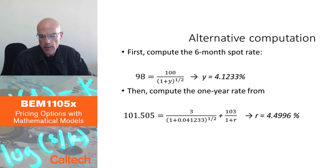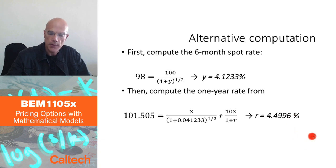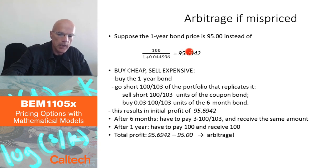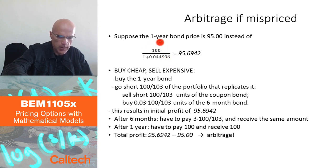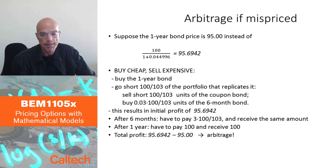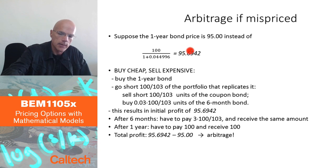Now let's verify numerically that if the rate is not 4.5%, there is arbitrage. At 4.5%, the one-year zero coupon bond price should be $100 / (1.045) ≈ $95.694. Let's suppose the actual market price is less than this — say, $95. The claim is there must be a way to make free money.